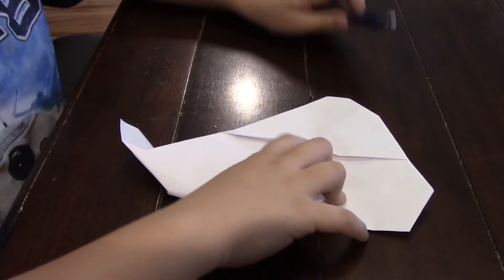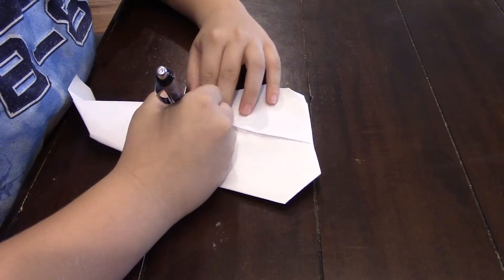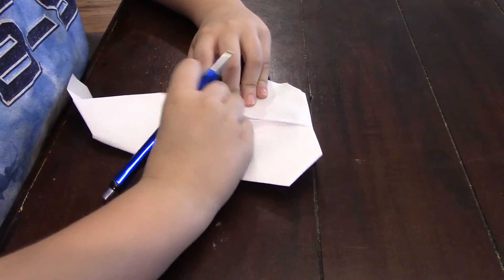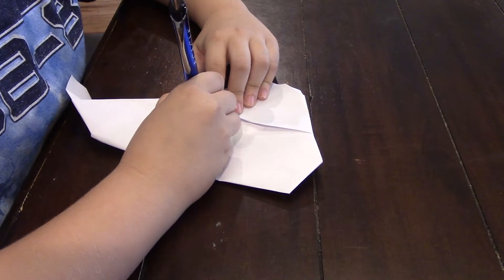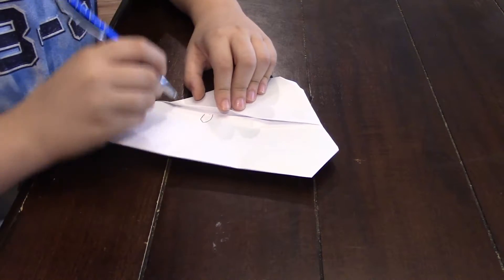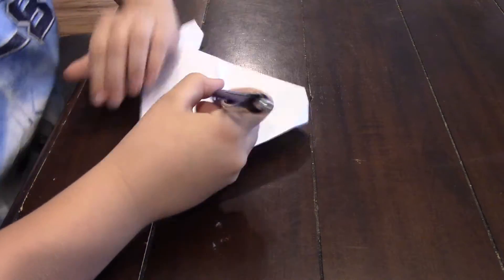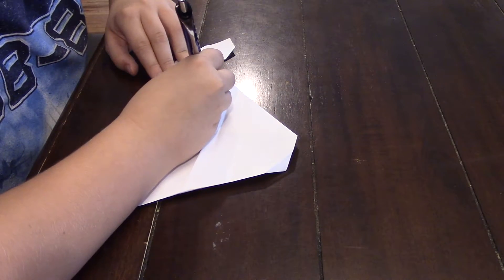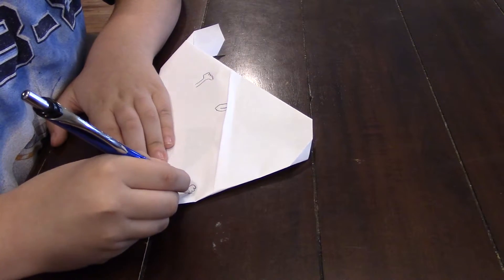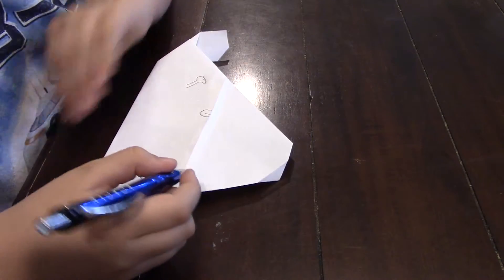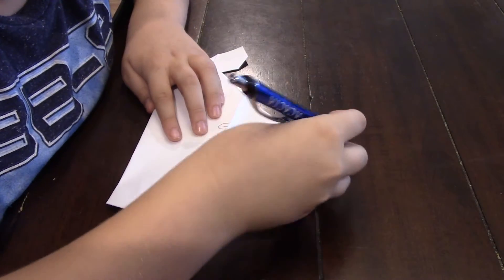Now we're going to decorate him. Take my trusty old pen here. You can draw his tongue sticking out of his mouth. And draw a little line on his tongue. And draw his arms like that.